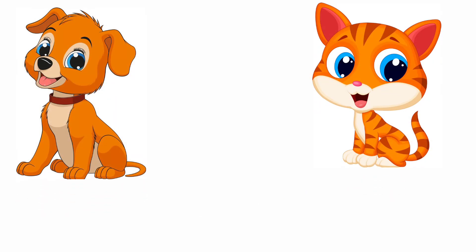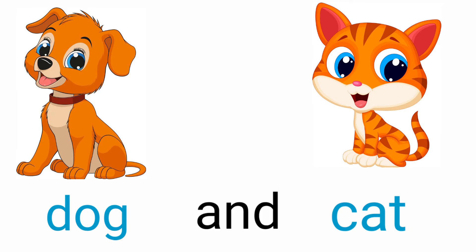Then move to the next one. The given pictures are dog, cat. Here we need to connect two words, so we have to use and. Dog and cat.